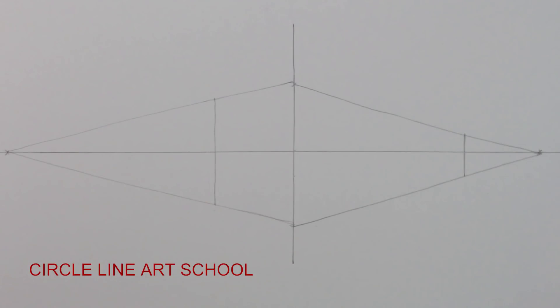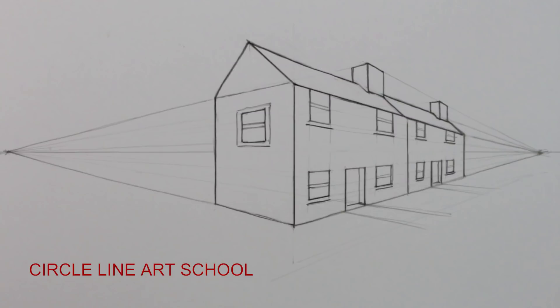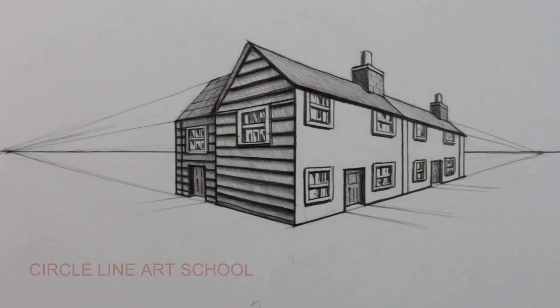Hi, Tom here and welcome to this week's Circle Line Art School Drawing Challenge: how to draw a house in two-point perspective in a landscape. For this drawing I use a 4B pencil.